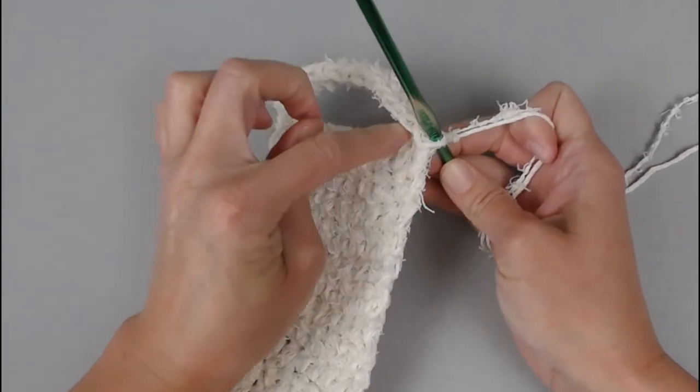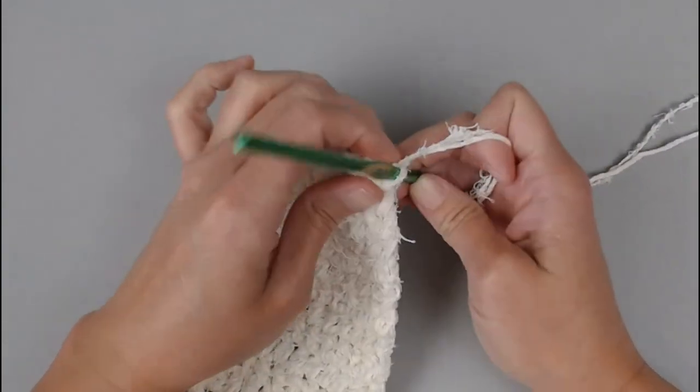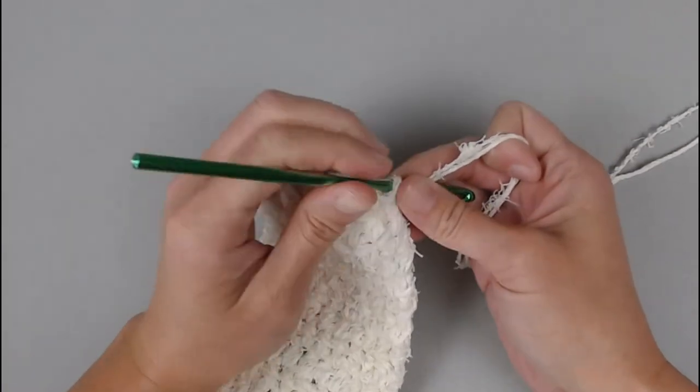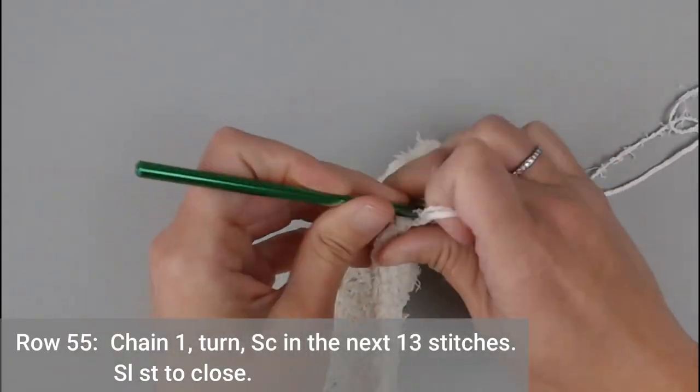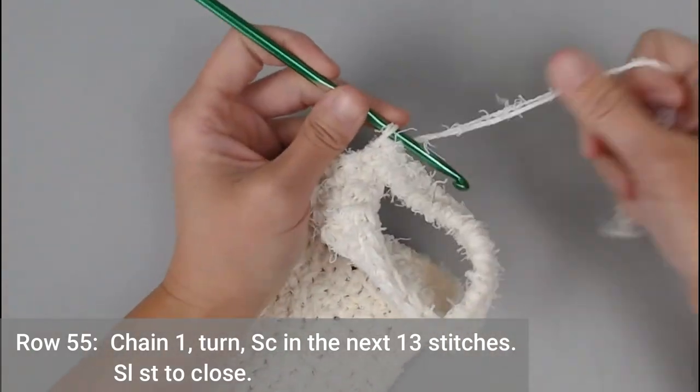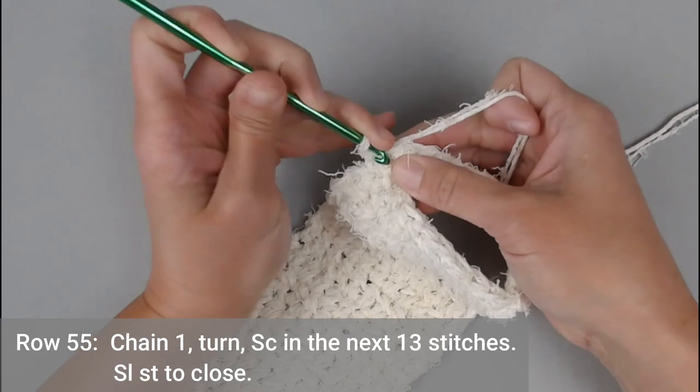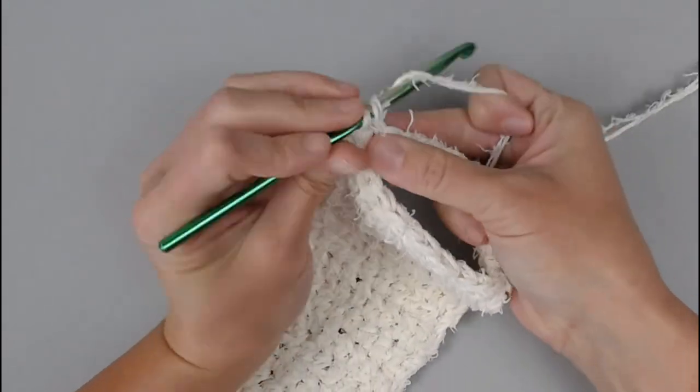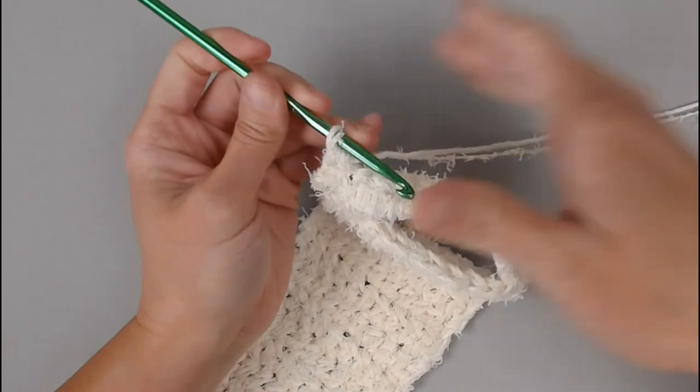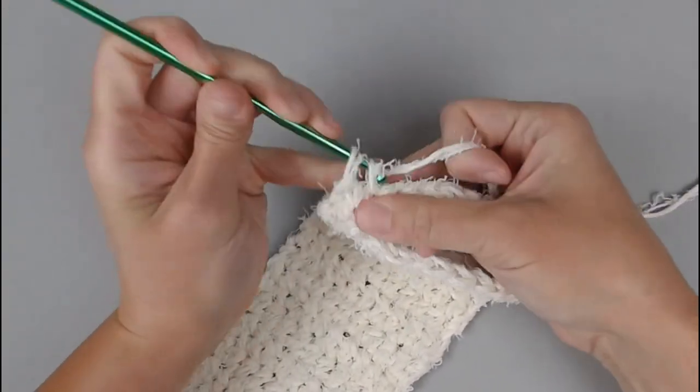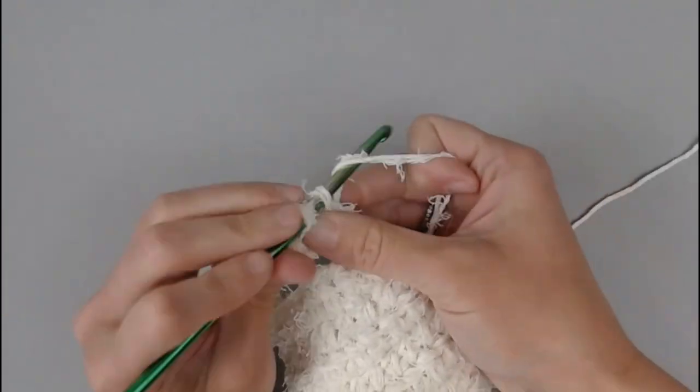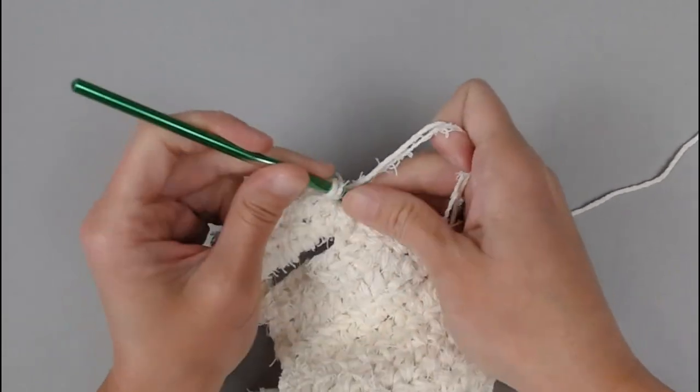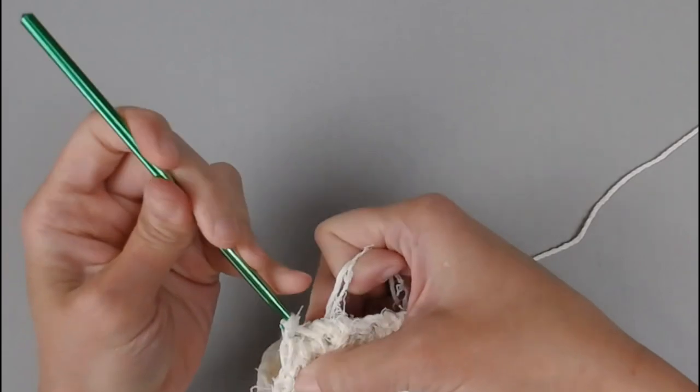This actually creates kind of a bow in the work, but it also adds an extra secure connection to the handle. That was row 54. We are on to row 55. Chain one, turn our work and make one single crochet in the next 13 stitches. So that one slip stitch that we just made, we're counting as a stitch.